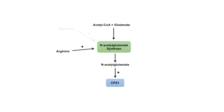The other activator of N-acetylglutamate synthase is starvation. When you're in starvation, your body is starting to utilize more protein as an energy source, which means it needs to excrete more nitrogenous waste. Starvation activates N-acetylglutamate synthase, leading to N-acetylglutamate, which then activates CPS1 and increases clearance of nitrogenous waste.